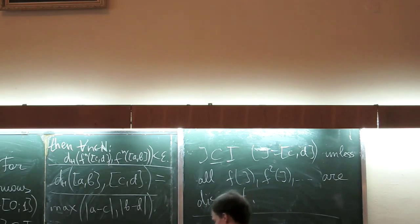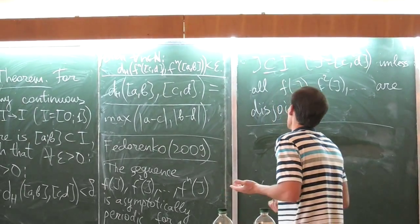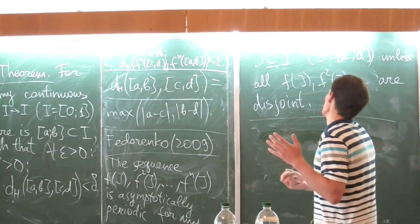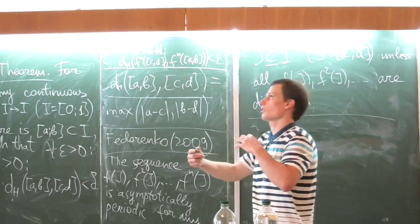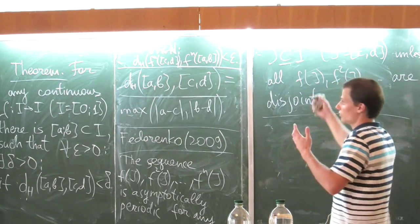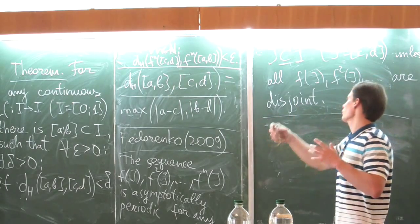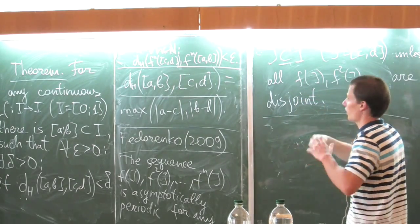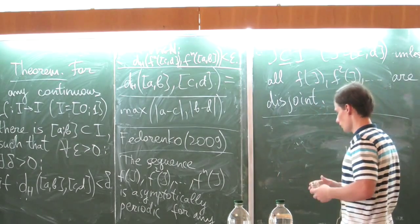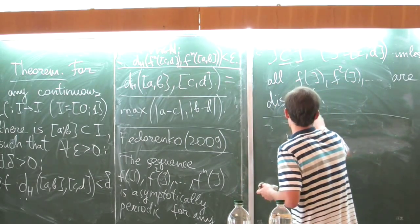For example, this is the key why the induced system is not so sensitive, because for points it is natural that all images are disjoint, unless this is a periodic point. But for segments which have positive length, unless this length converges to zero very fast, the length of these images is positive, and so the natural situation is that some segments intersect, like F^K([A,B]) and F^N([A,B]).